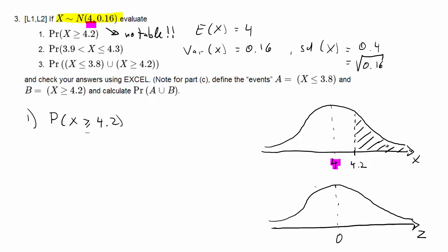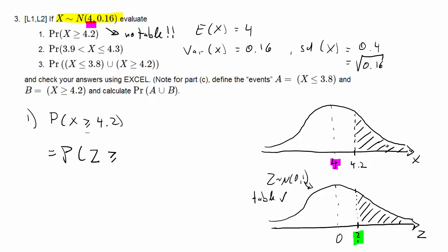Fortunately, a translation exists. The standard normal has a mean of 0 and variance of 1, and that's what we have a table for. The probability that x is larger or equal to 4.2 is the same as the probability that z is larger or equal to 4.2 minus the mean of x, divided by the standard deviation of x, which is 0.4. These two probabilities are the same.